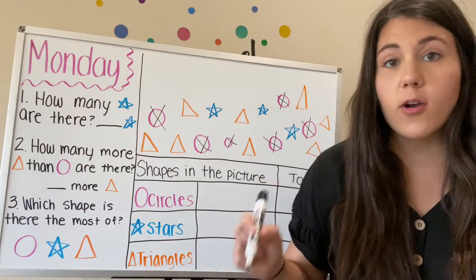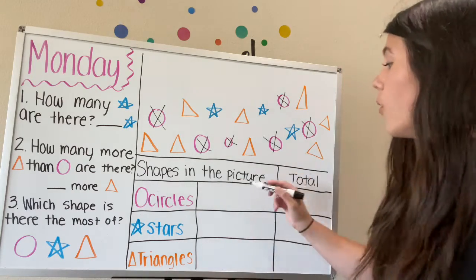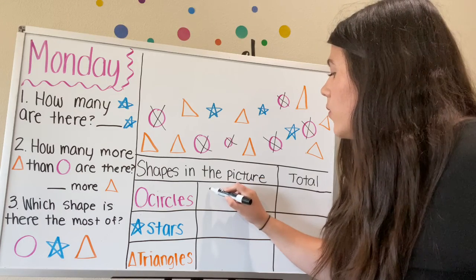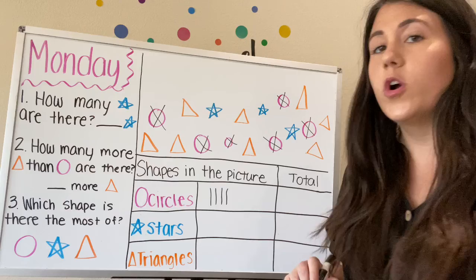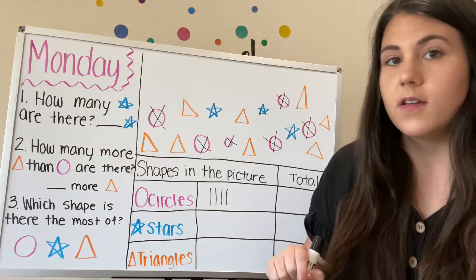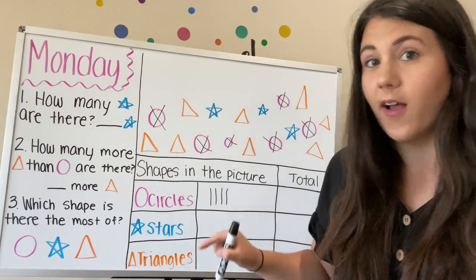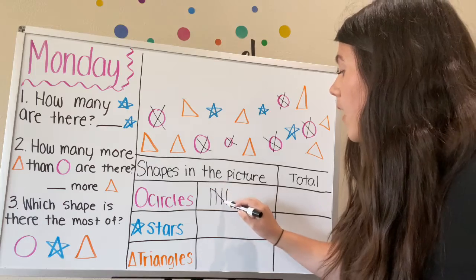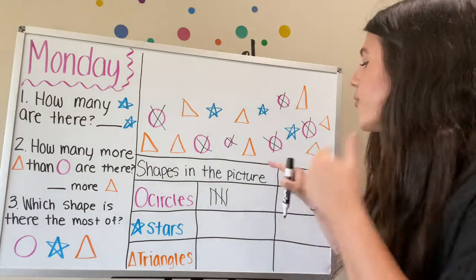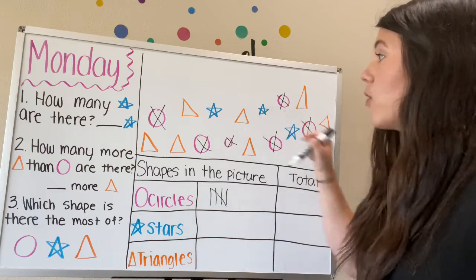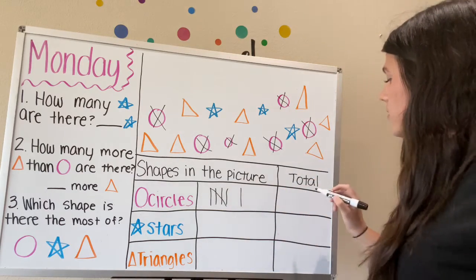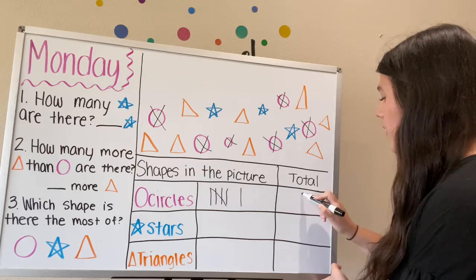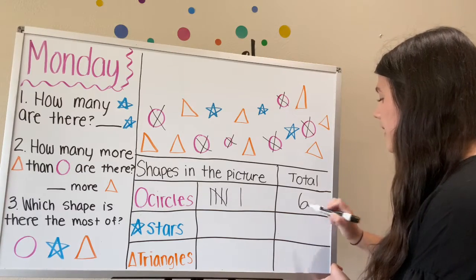Okay, so we're going to use tally marks to show that. So we're going to start by drawing one, two, three, four. What should I do after that? I should cross it. Yes. To make a group of five. Okay, so we have five. And now we had a total of six circles, so we need to draw one more. So we have six circles. So now you're going to write our number six. Six total.